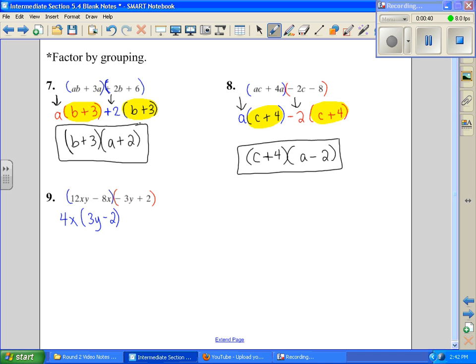Okay, in the red, there's nothing that those two have in common, so I'm going to factor out just a positive 1. So that leaves me with negative 3y plus 2.